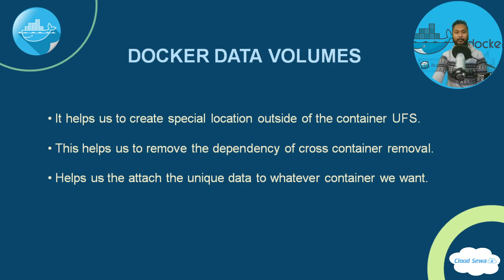For better transparency, consider this scenario: you have a container up and running with unique data stored in the Union File System. An update arrives for the service running in that container, so you destroy the container, download the updated image, and create a new container from the updated image. In doing so, you're most likely to lose your unique data. However, if you simply reboot or restart your container, the UFS remains intact and data is preserved. To remove this limitation, Docker introduced data volumes and bind mounts.